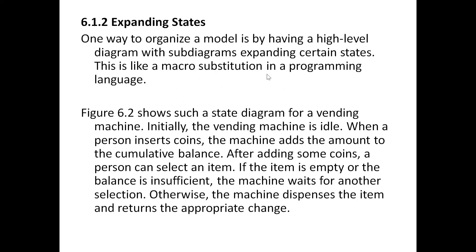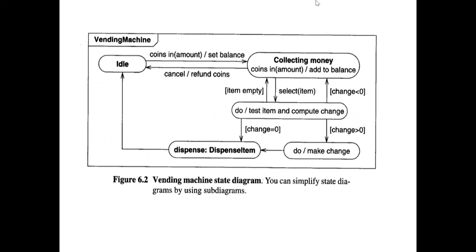The next thing we had was expanding states. You need to organize your model with a high-level diagram. In the vending machine example, 'dispense' is the local name and 'dispense item' is the name of the sub-diagram being called, also known as a submachine. States are represented with rounded boxes, arrows are transitions, and these are the events and what effects they cause. Direction indicates which way the transition is taking place.